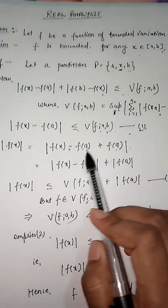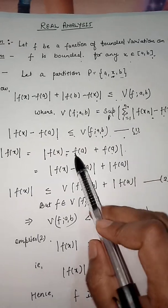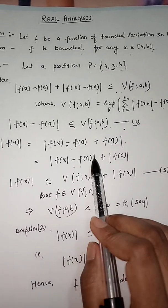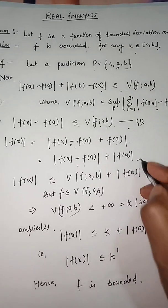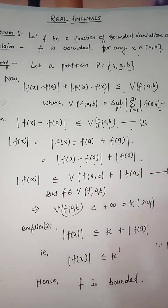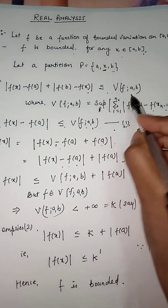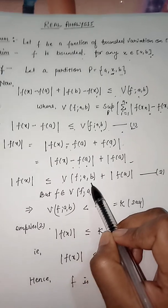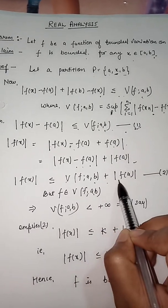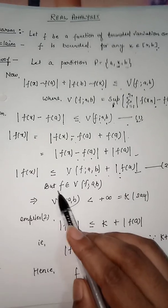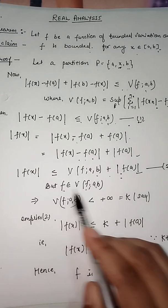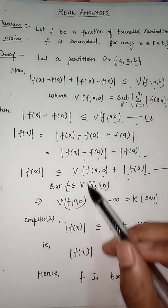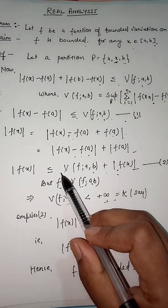Applying the triangle inequality, |f(x)| ≤ |f(x) - f(a)| + |f(a)|. The term |f(x) - f(a)| is less than or equal to V_a^b(f). Therefore, |f(x)| ≤ V_a^b(f) + |f(a)|. Since f is of bounded variation on [a, b], V_a^b(f) is less than some finite number K.